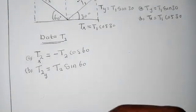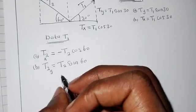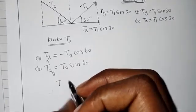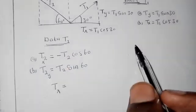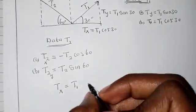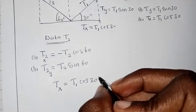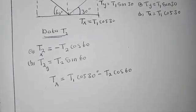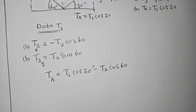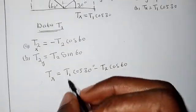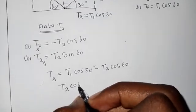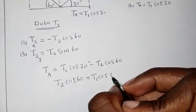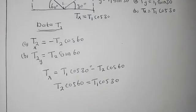From here, we can add up everything in the X-axis. The total TX equals T1 cosine 30 minus T2 cosine 60. Taking T2 cosine 60 to the other side, we get T2 cosine 60 equals T1 cosine 30. Dividing everything by cosine 60, we get T2 equals T1 times cosine 30 divided by cosine 60, which gives us T2 equals 1.732 T1. We mark this as equation 1.